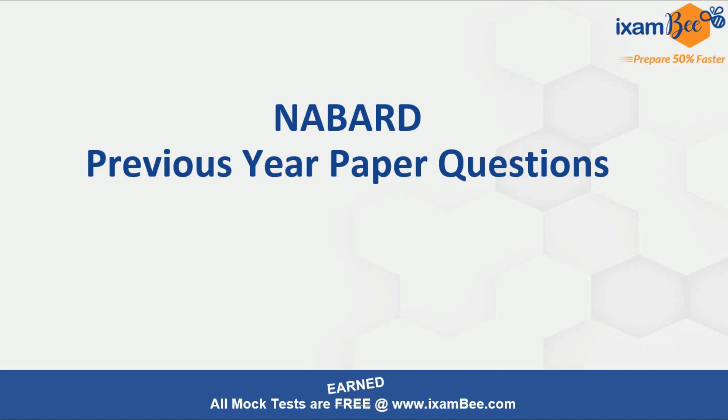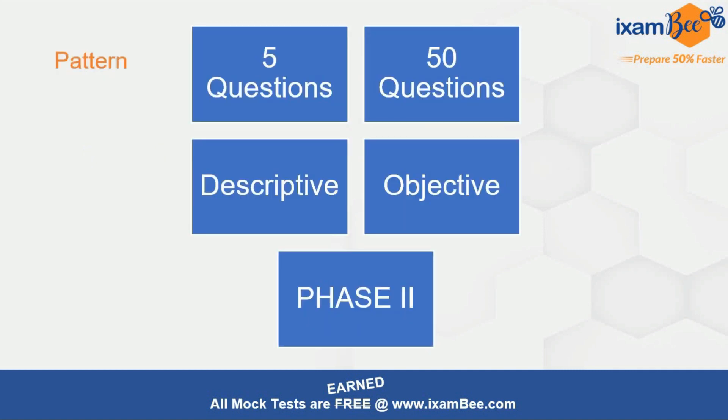You have to clear the cutoffs in Phase 1 and then you will be allowed to go to Phase 2. In Phase 2 you have to write two papers: one will be the IT paper and the other will be the English descriptive paper. Within the IT paper you have to write two papers — one objective paper and one descriptive paper.